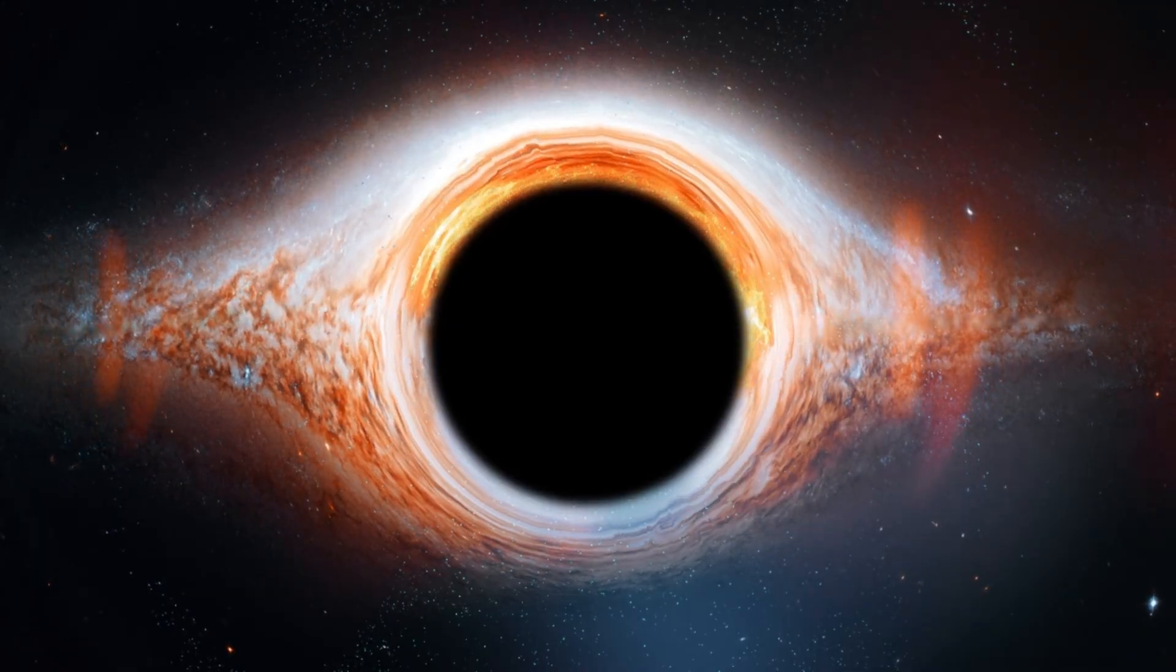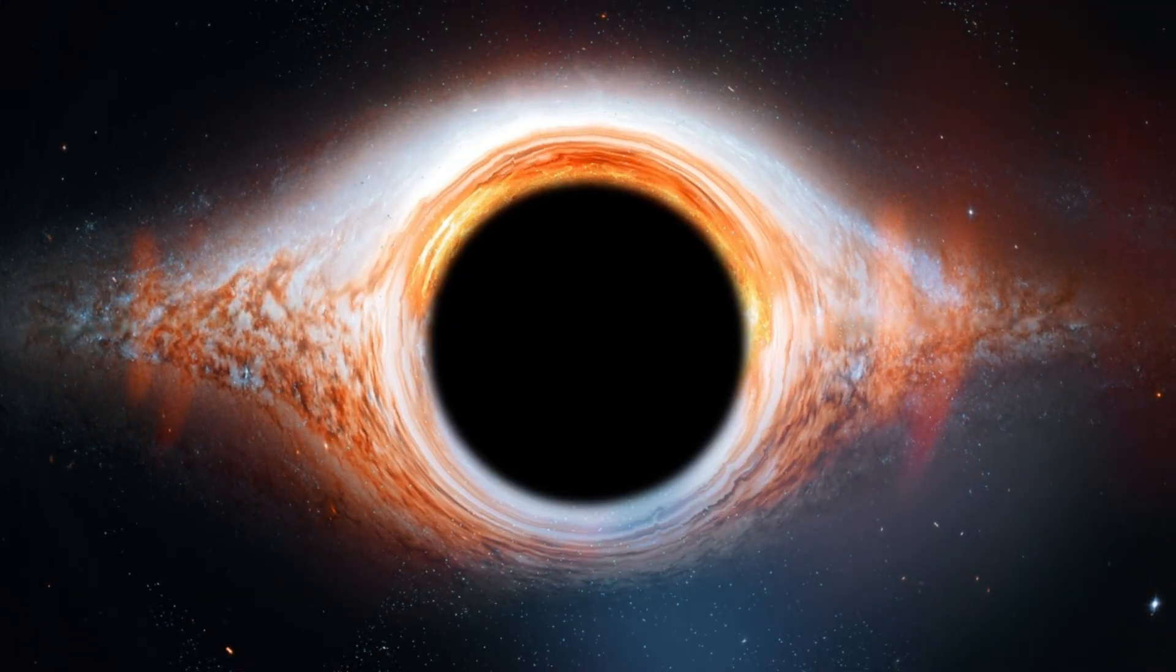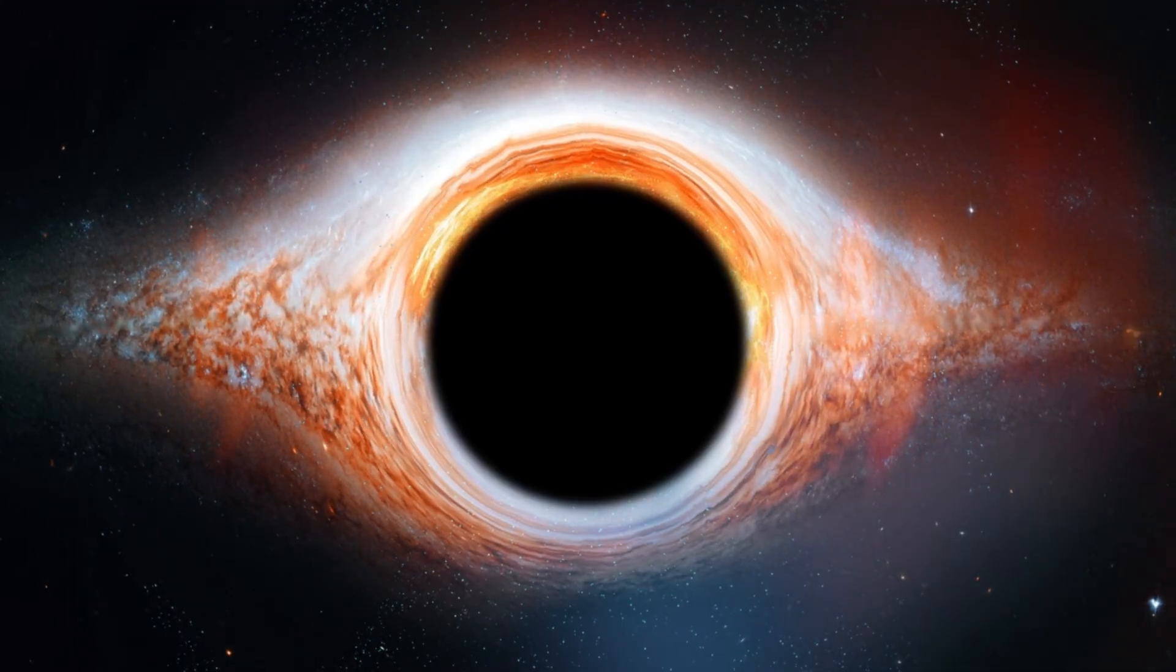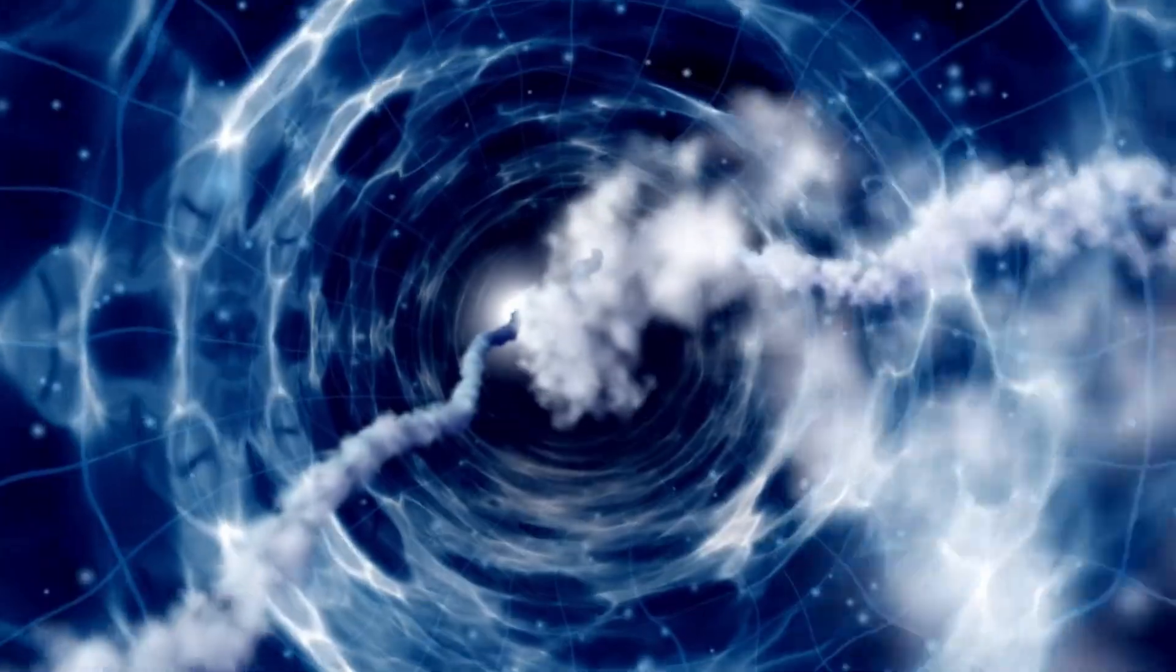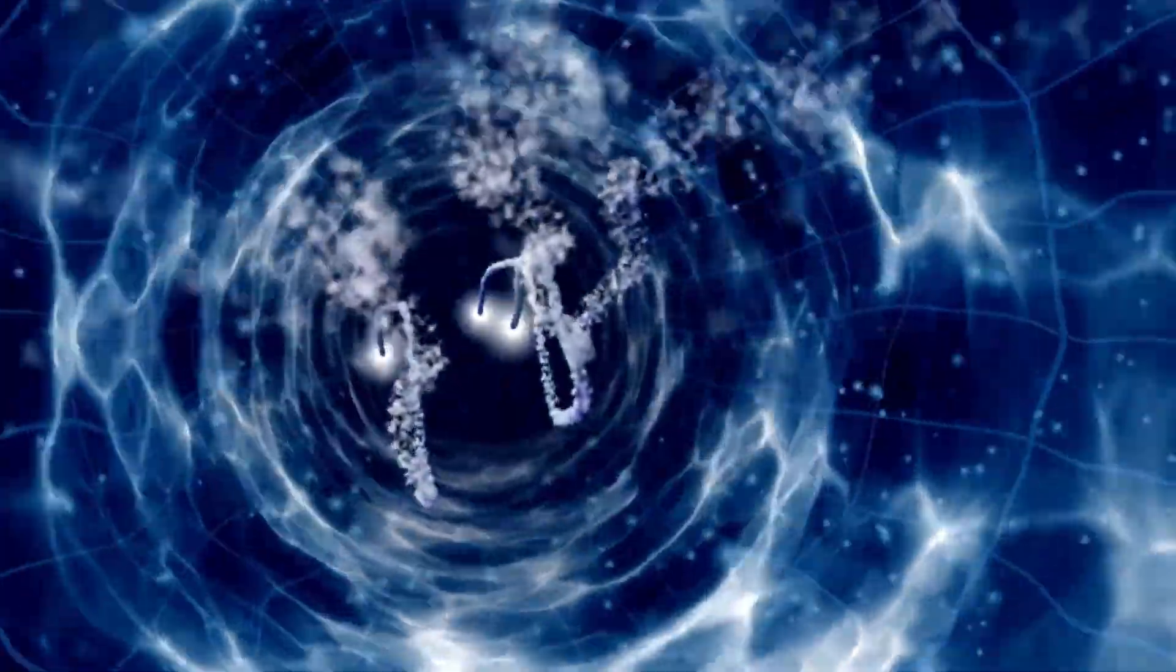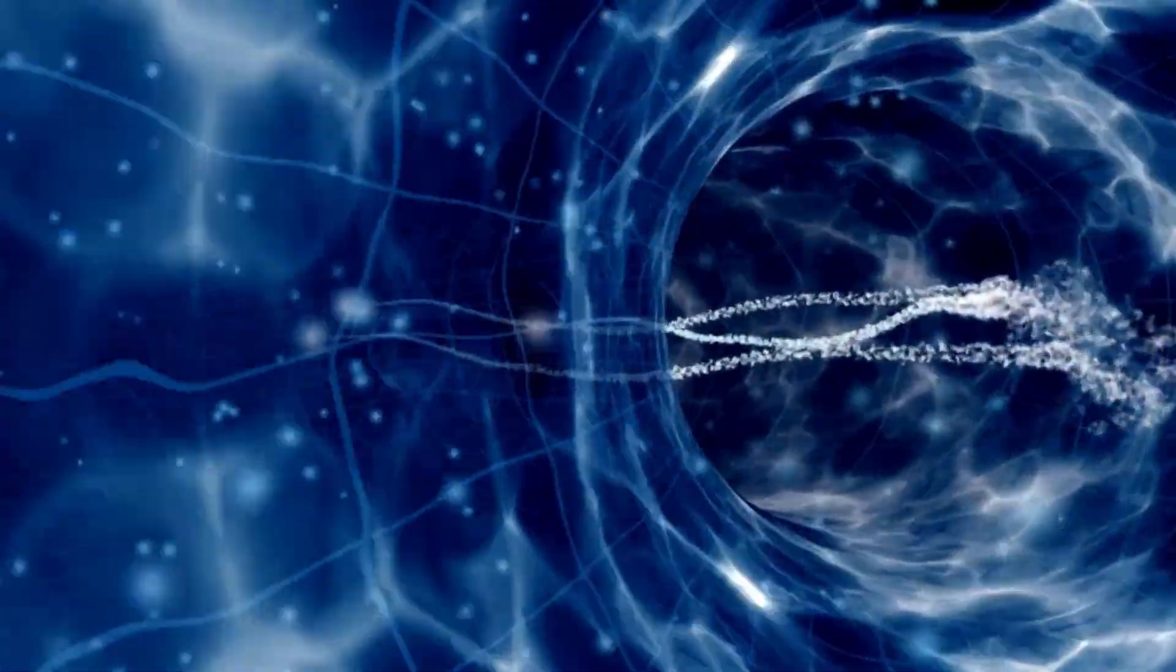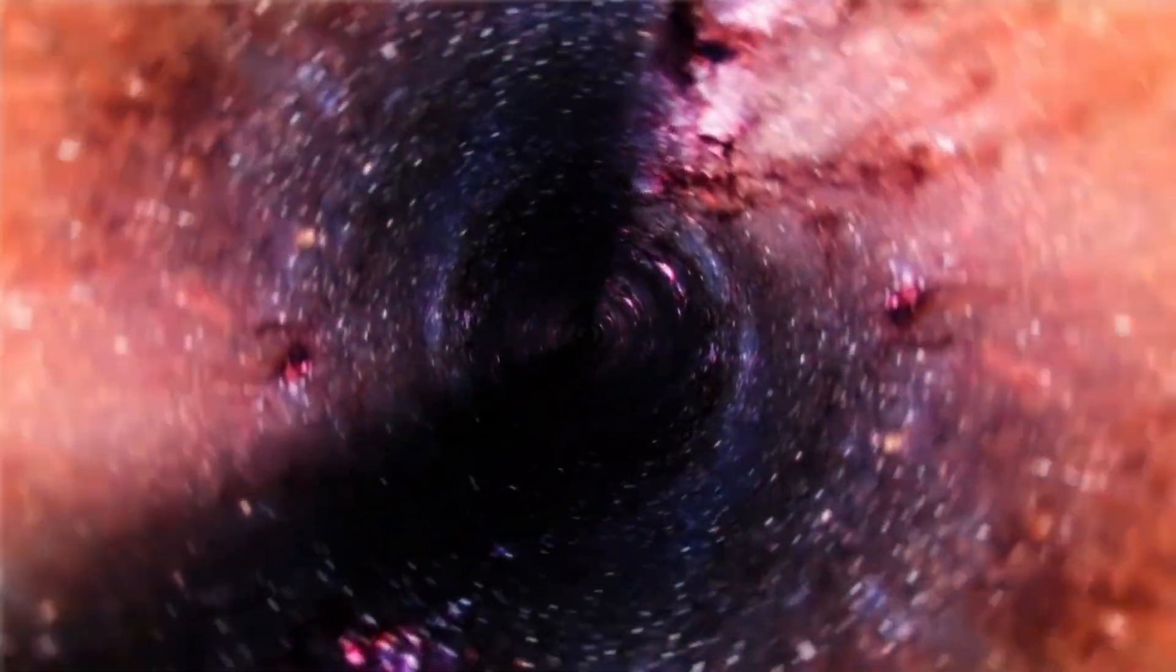Digging deeper, astronomers realized that GNZ-11 isn't just a galaxy, it's also home to something monstrous at its center, a supermassive black hole roughly 6 million times the mass of our sun. Even that by itself is shocking because according to our standard theories, black holes of this size shouldn't even exist so early in cosmic history. But it gets even weirder when you look at how this black hole is behaving.